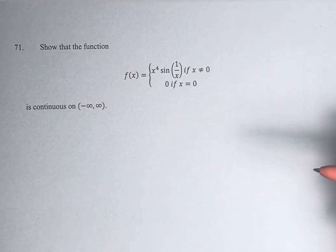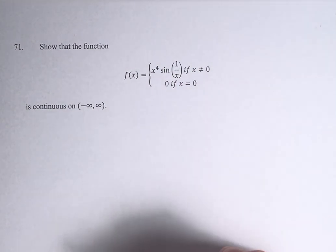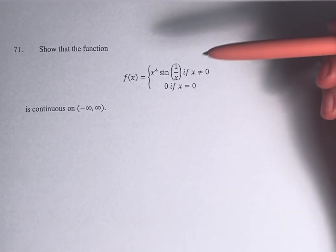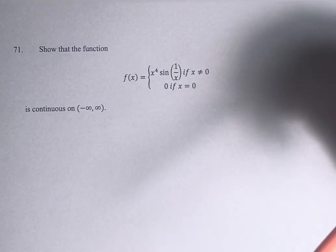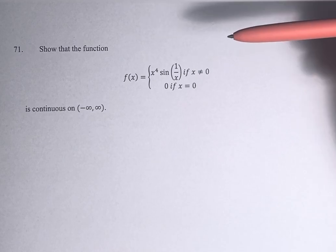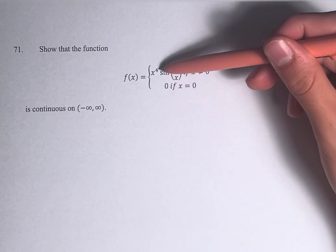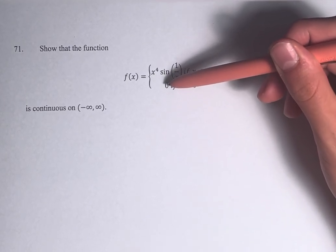So basically what we have here is a piecewise function. And we know, because this is a combination of polynomial, trigonometric, and rational functions, and here is just a constant.